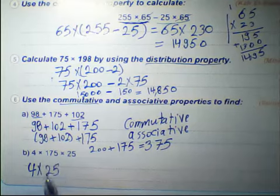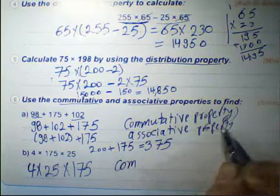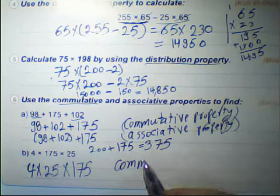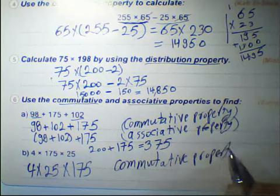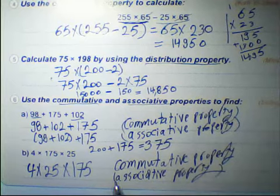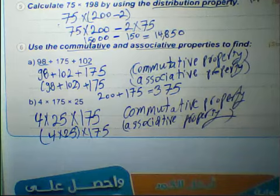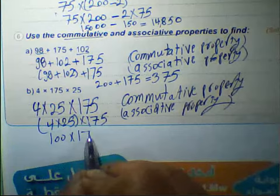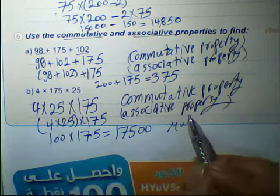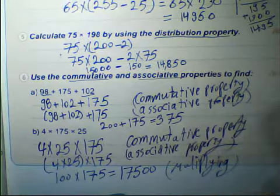The last equation: 4 multiplied by 25 multiplied by 175. Using the commutative property, write 4 multiplied by 25 first, which equals 100. Then 100 multiplied by 175: write 175 and put two zeros behind it, giving 17,500.